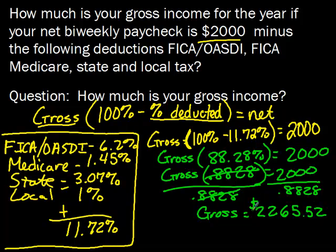So if FICA OASDI, FICA Medicare, and state and local taxes were all deducted and you have a net paycheck of $2,000 — which is how much you have after taxes — the amount before taxes would be $2,265.52.